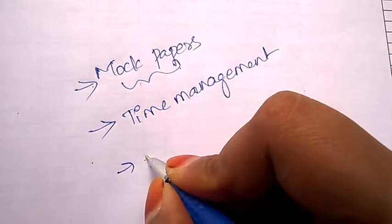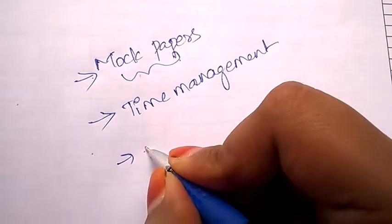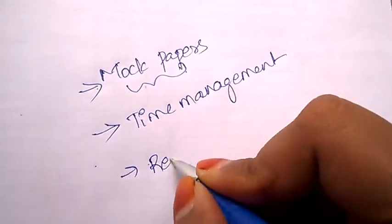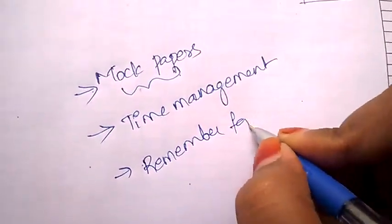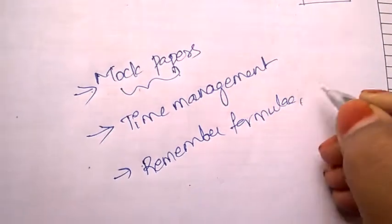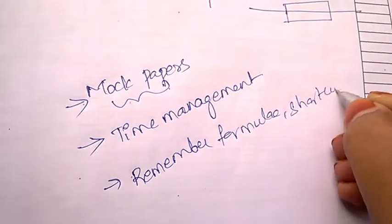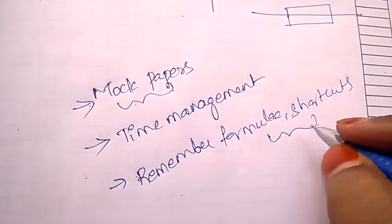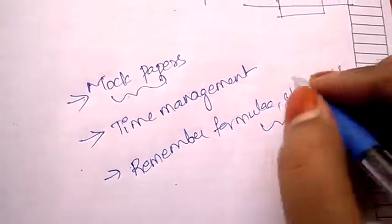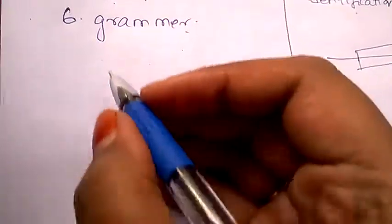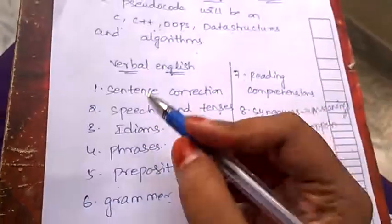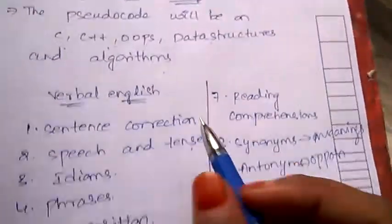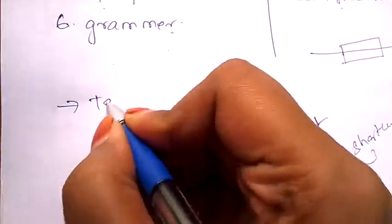After that, you need to remember the shortcuts and formulae for quantitative aptitude because this helps you in solving the problems fast. There is limited time, and once you're selected in round one, you'll be promoted to round two which is technical.